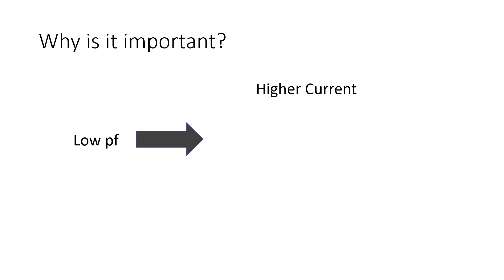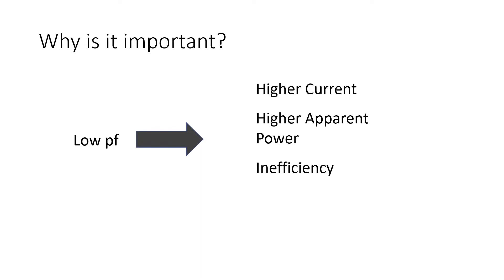With an improved power factor, the voltage drop in the conductor is reduced, improving the voltage at the equipment. The apparent power rating of the equipment is inversely proportional to the power factor — the smaller the power factor, the larger the kVA rating. Therefore, at lower power factor the kVA rating of equipment must be made large, making the equipment expensive. The large current at lower power factor causes more losses in all elements of the supply system, resulting in poor efficiency.